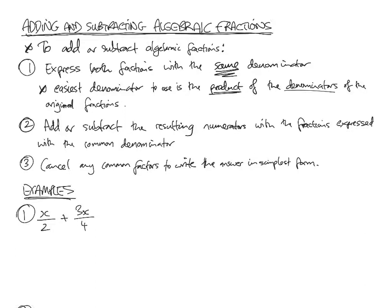Then, two, after you've expressed both fractions with that same denominator, you add or subtract the resulting numerators to get the answer, depending on whether you're adding or subtracting, and then after that, you cancel any common factors to write the answer in simplest form.